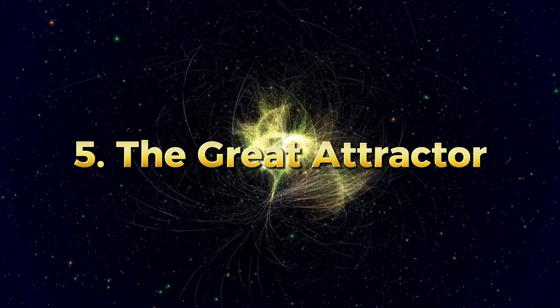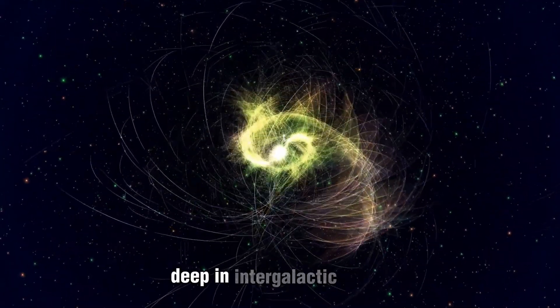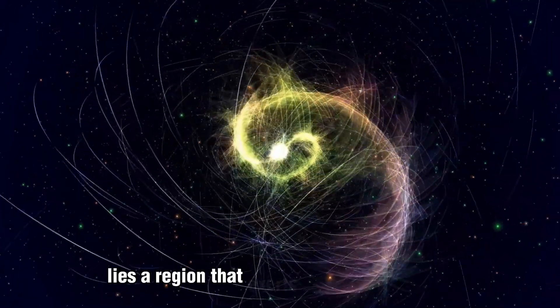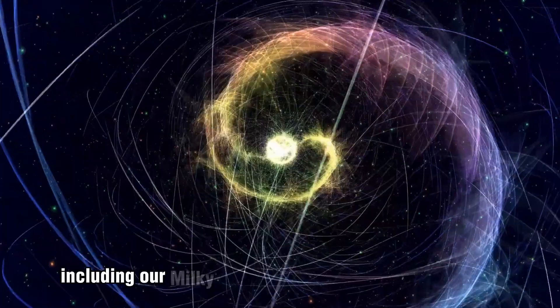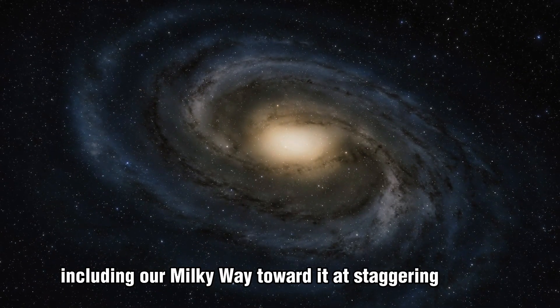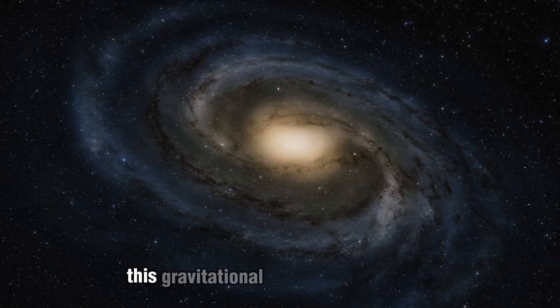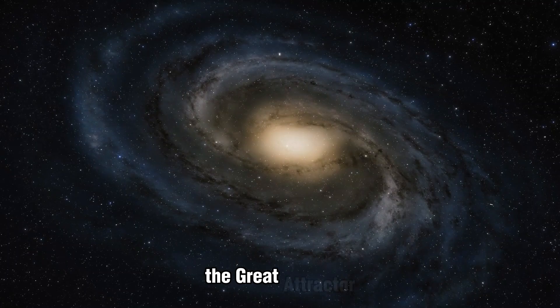The Great Attractor: Deep in intergalactic space lies a region that exerts a gravitational pull so strong that it is drawing galaxies, including our Milky Way, toward it at staggering speeds. This gravitational anomaly is known as the Great Attractor.